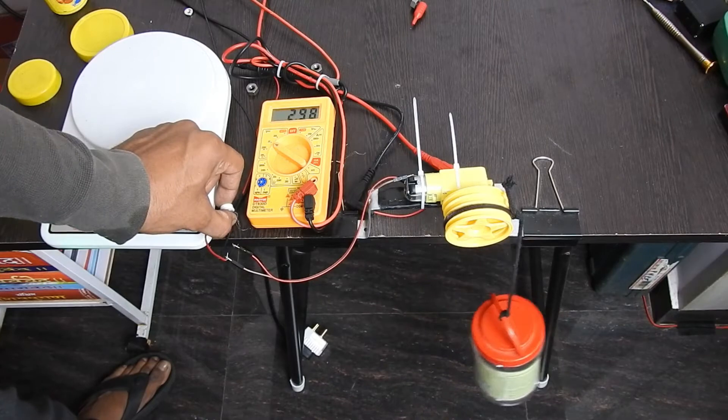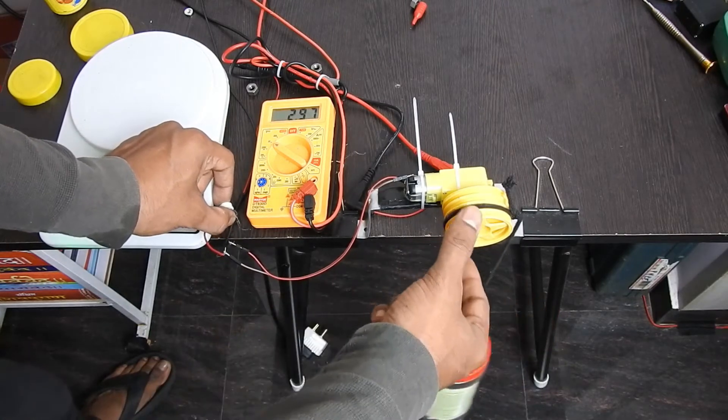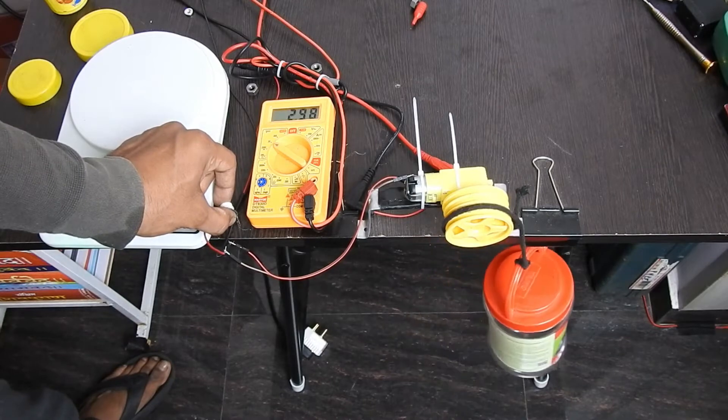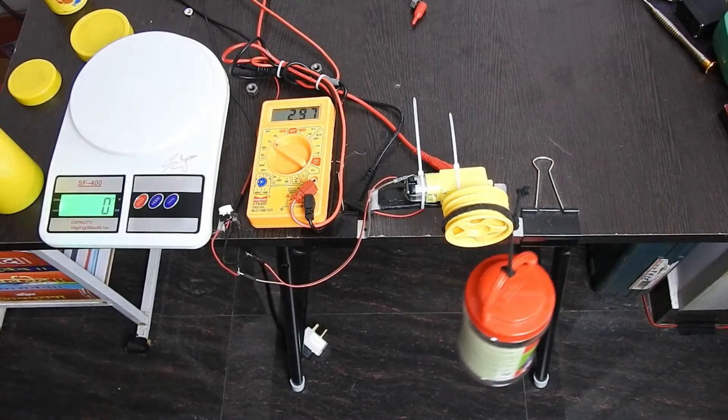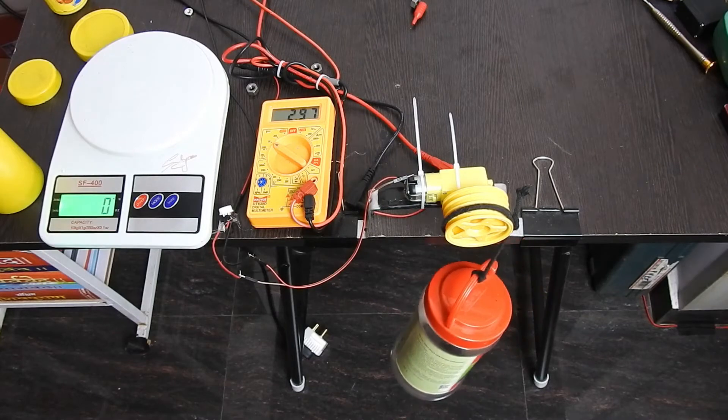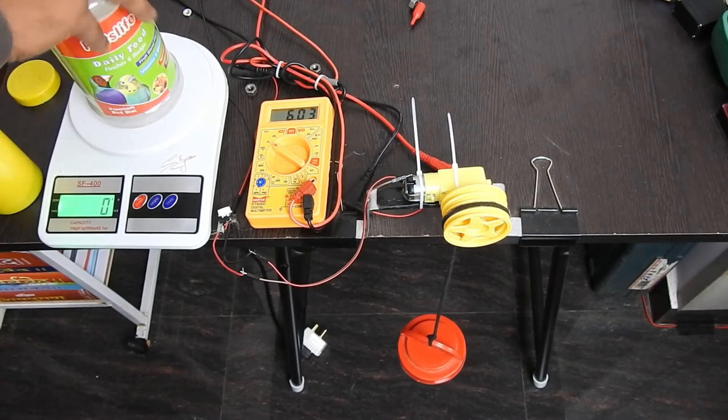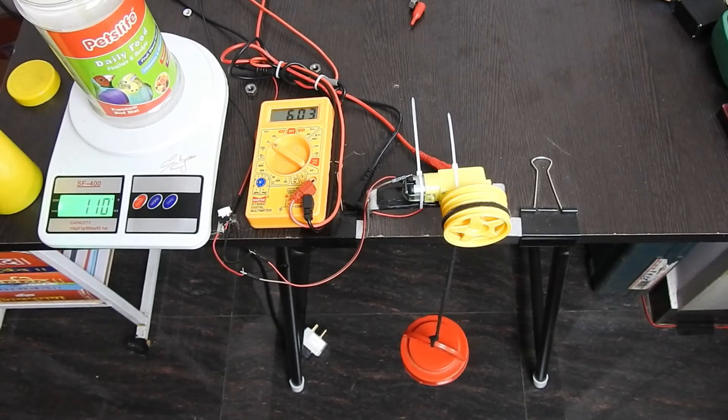Okay, almost there. It could almost take it. If I touch it a bit, it'll be able to take it. Anyways, now we'll pump up the voltage to 6. At 6 volts, currently we have 110 grams onto the device.